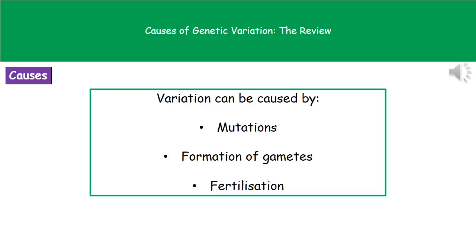Welcome to our review on the causes of genetic variation. The first thing we need to understand is what causes variation in organisms. We have three areas to concern ourselves with here: mutations, the formation of gametes, and fertilization.